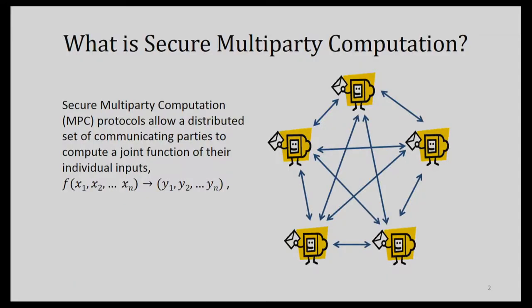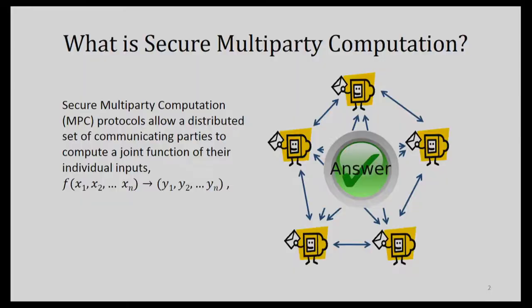So to start from the beginning: secure multi-party computation is a subfield of cryptography that deals with a very general type of problem in which you have a group of collaborating parties who don't necessarily trust each other. They each have some data they want to keep private, and they want to compute some function from combining all their data. If there are n parties and each one has an input, you want to get outputs for those. Typically the output is the same for all parties, but it can be different.